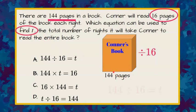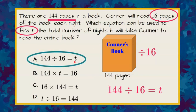So we're going to find t by saying 144 divided by our groups of 16 pages, and that will equal t, the number of nights that it will take him to do this. So now let's look at our answer choices. And there it is. Choice A is the first one.